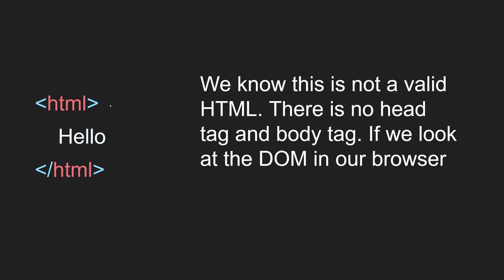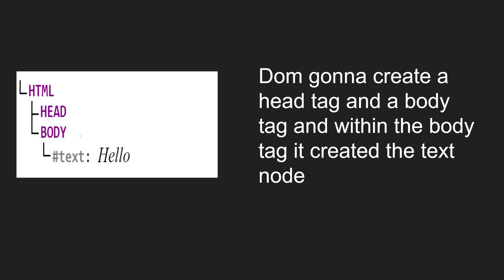Here I have an open html element and I have added a text node 'Hello'. We know that this is not valid HTML — there is no head tag and no body tag. But if you look at the DOM in your browser, it will look like this: it will have html, with two trees — head and body — and the body will have a text node with 'Hello'. The DOM will create a head tag and a body tag automatically.